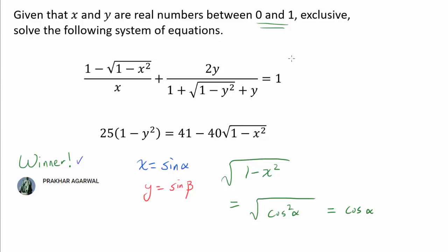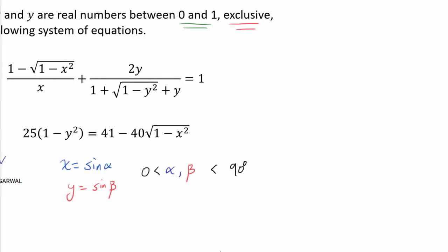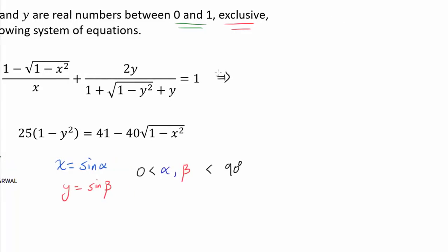And the simplifications like this in the first equation is going to allow us to employ our knowledge of trigonometric identities to even more simplify the first equation. Before we proceed, I should make explicit that we are going to let alpha and beta be between 0 and 90 degrees. And there is no problem with us making such an assumption because we know x is between 0 and 1 and y is between 0 and 1 exclusive. So now let's see how the first equation has changed once we make this substitution.